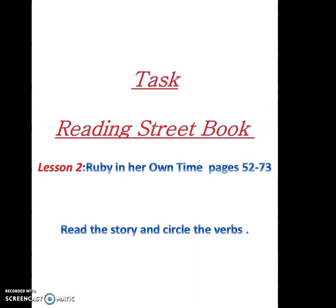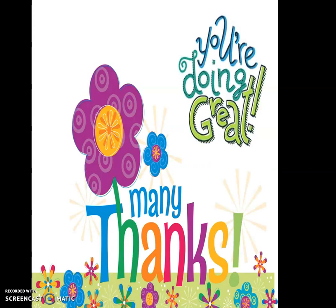Now the last task for today. Get your reading street book and open the story 'Ruby in Her Own Time,' page 52. You need to read the story and circle the verbs. I will show the answers in the next video. You are doing a great job. Many thanks. Goodbye.